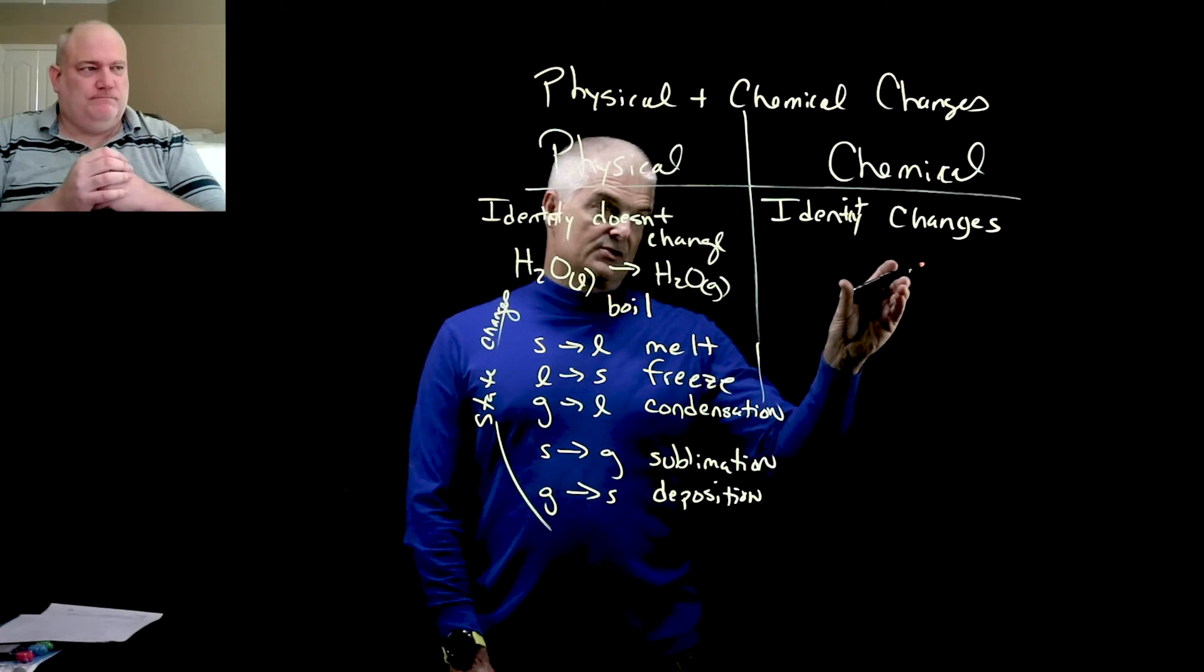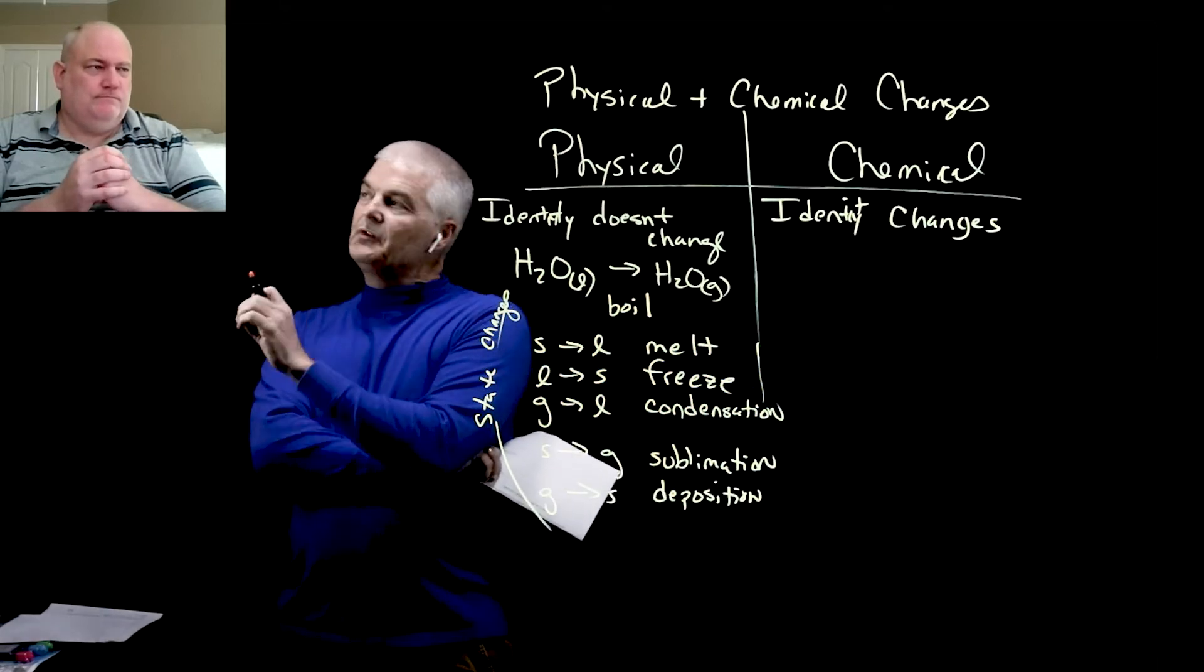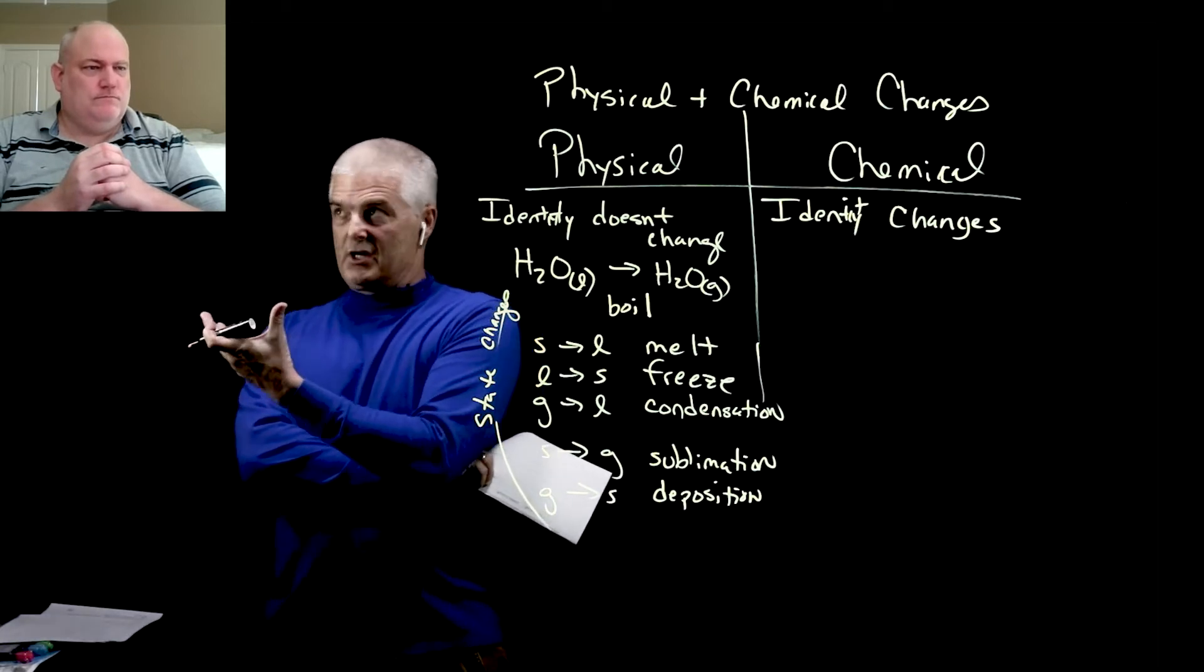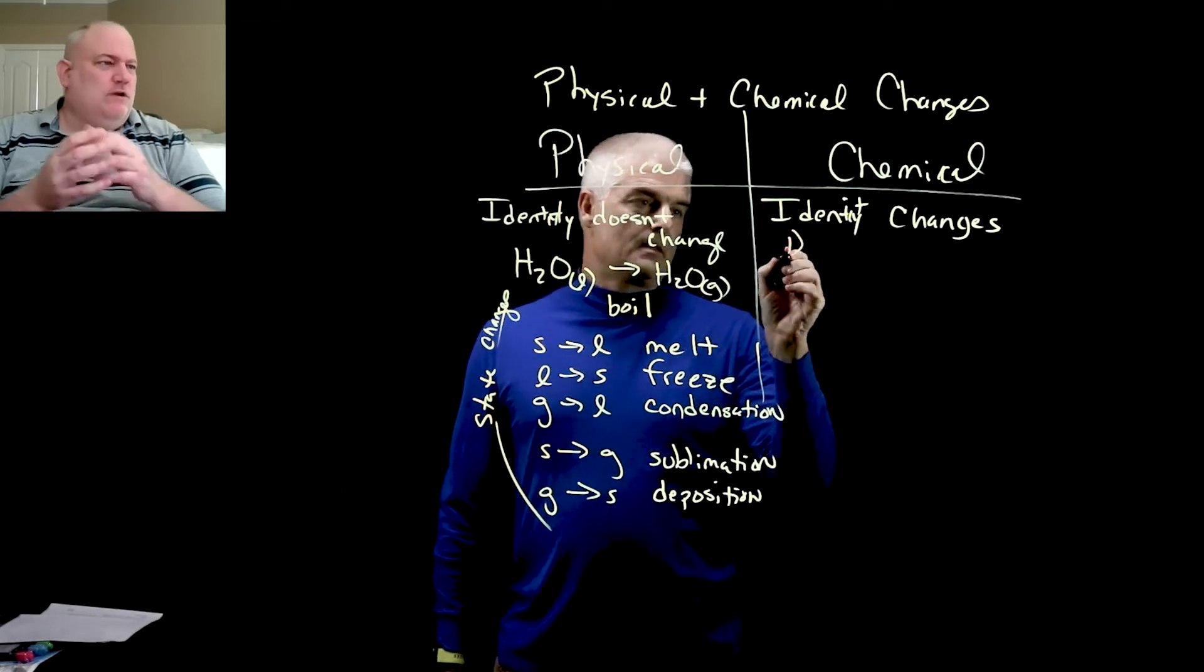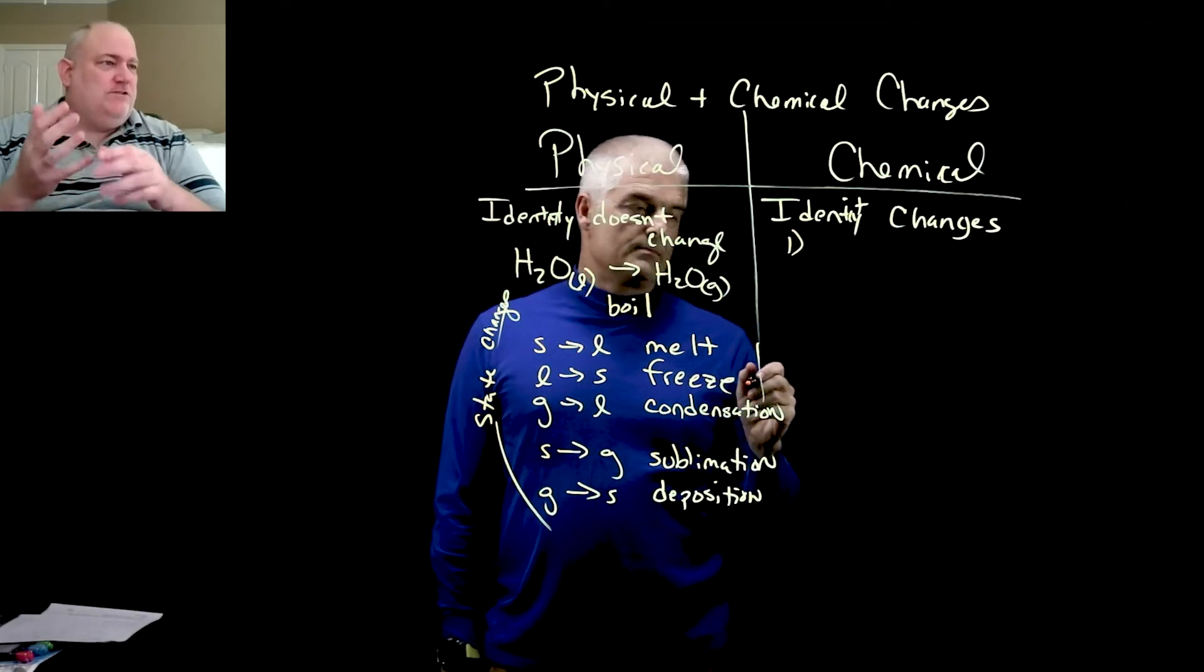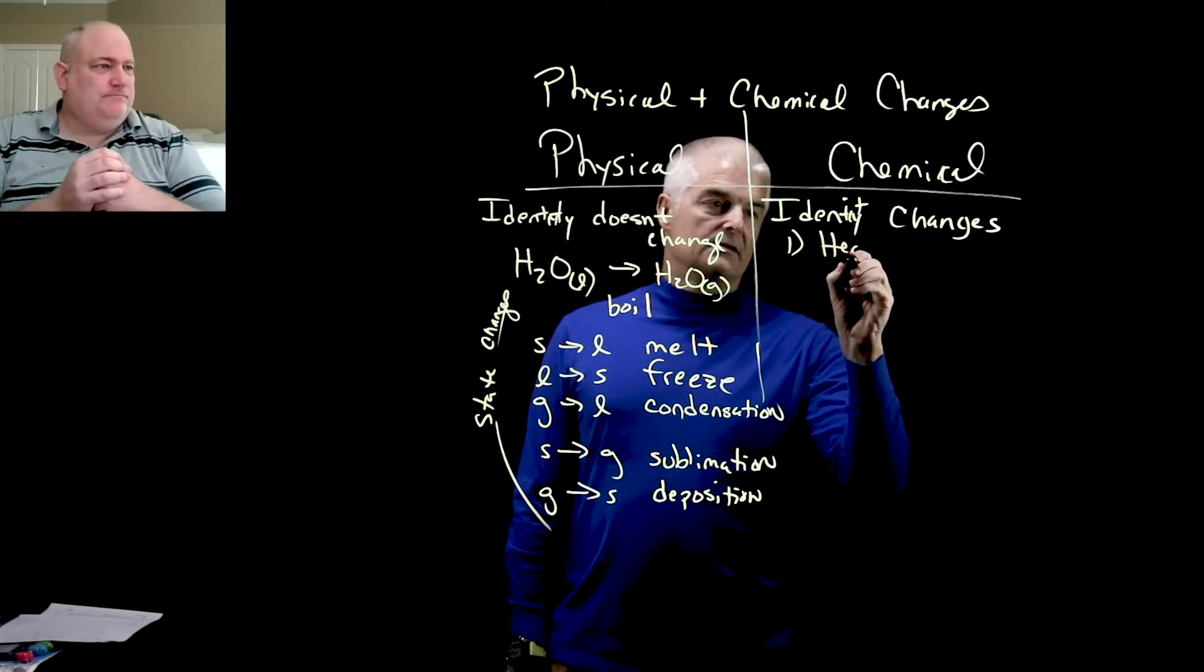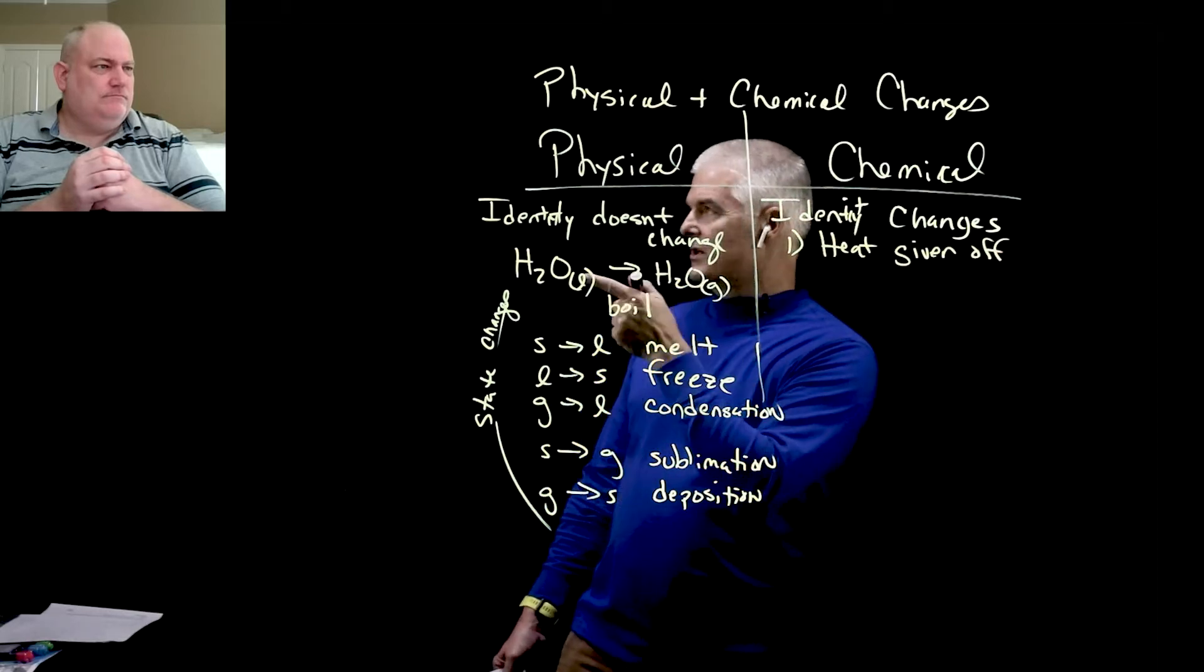Chemical changes are a little bit different though. The identity changes. And so it turns out that we talk about chemical changes, folks, there's a few sort of tells that tell you that you have a chemical change happening. What's one, Mr. D? So we're talking about the evidences for chemical change, and one would be heat is given off. Alright, heat given off.